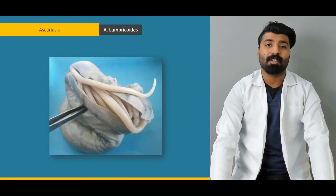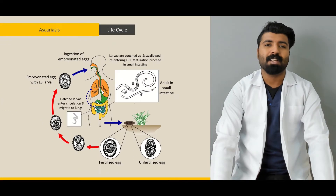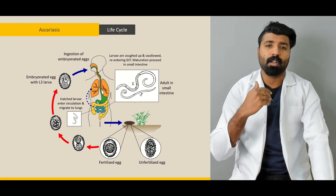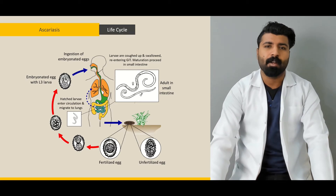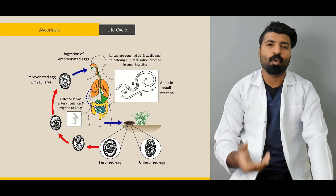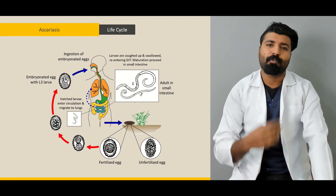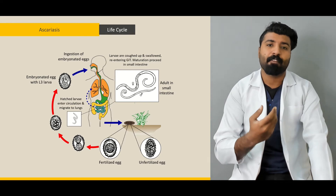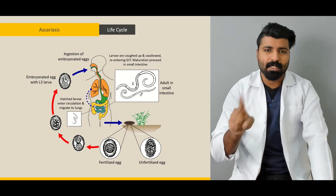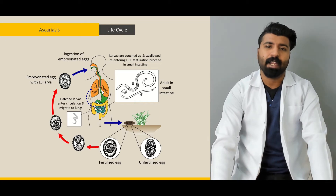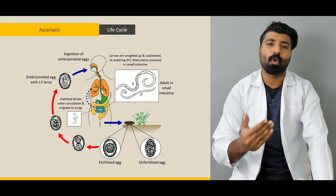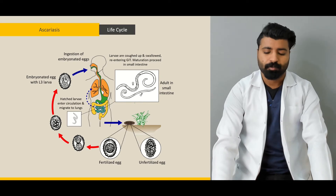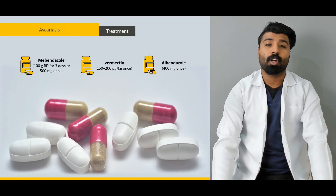Next, we're going to talk in detail about Ascaris lumbricoides, which are also called roundworms. We're going to cover the life cycle of Ascaris lumbricoides, how we differentiate between male and female, how Ascaris lumbricoides enters our intestine, then travels into our respiratory system, and from there goes back into our intestine — and why this cycle keeps happening rather than the worm simply staying in the intestine.